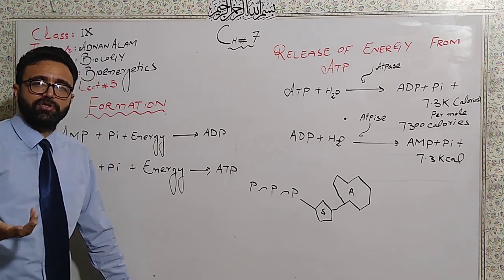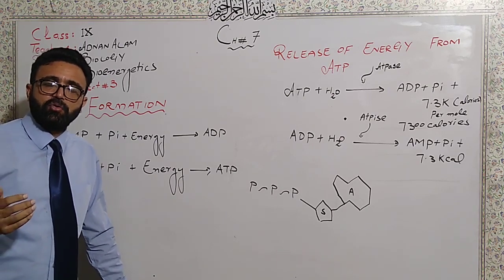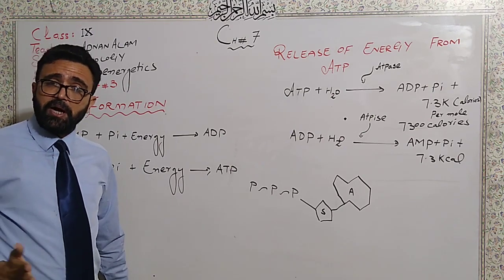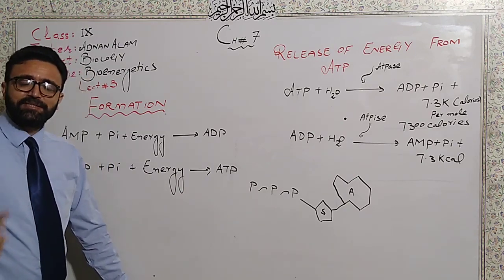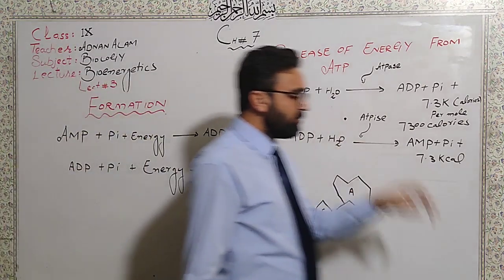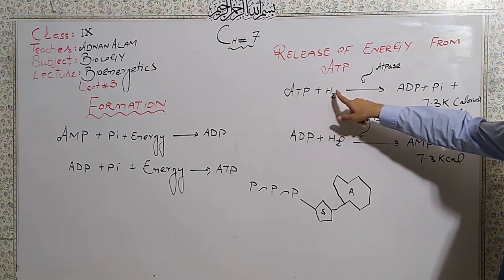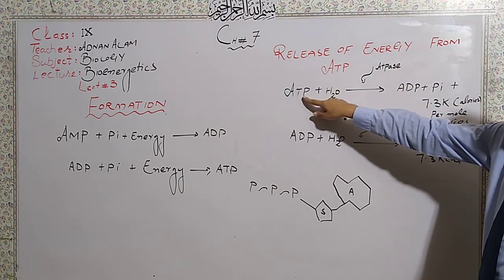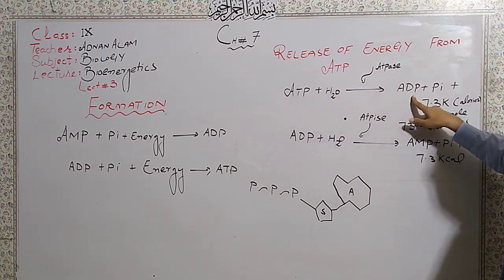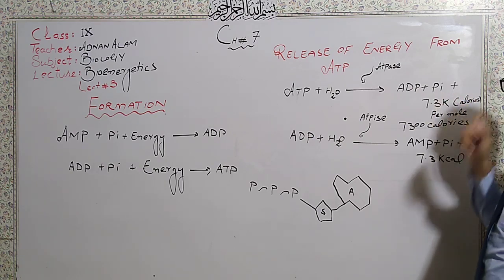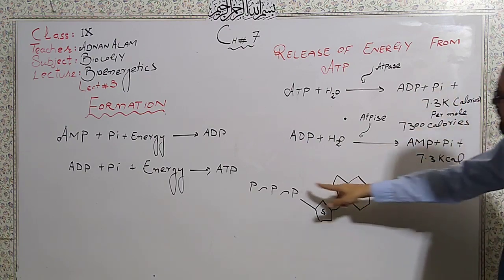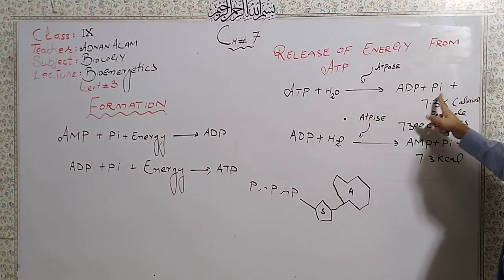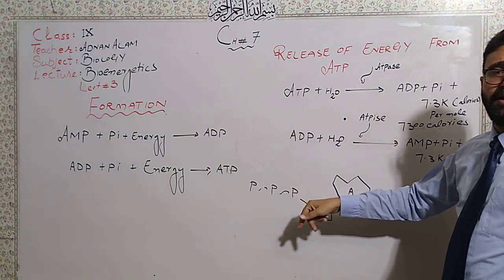Different food substances yield different amounts of ATP. A glucose molecule completely oxidized gives us 36 ATP. A fat molecule — an 18-carbon lipid — gives us 144 ATP, while a 16-carbon fat gives 148 ATP. To release energy, ATP is hydrolyzed: ATP plus water, catalyzed by the enzyme ATPase, produces ADP plus Pi and releases 7.3 kilocalories of energy per mole.